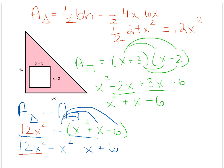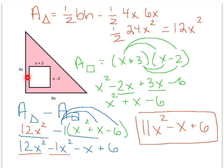I have 12x squared minus 1x squared, which gives me 11x squared, and then I have minus x plus 6. That will represent the area of the shaded region, because I took the area of the entire shape, which was the triangle, which gave me an area of 12x squared. I subtracted out the area of the rectangle, which was this, and ended up with 11x squared minus x plus 6.